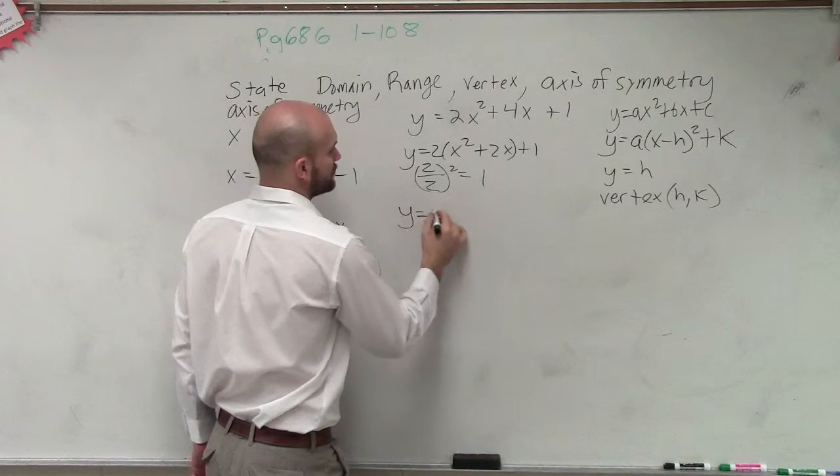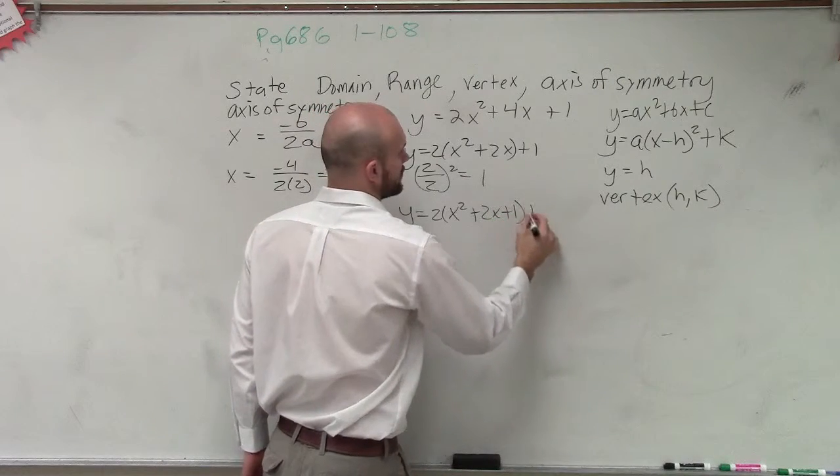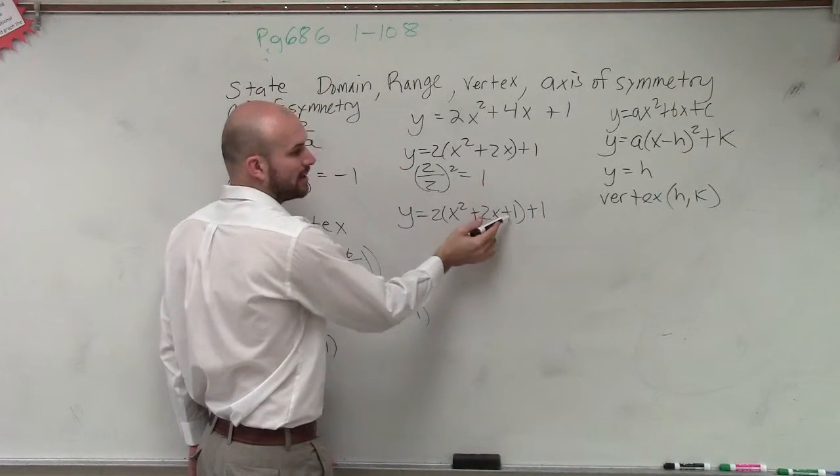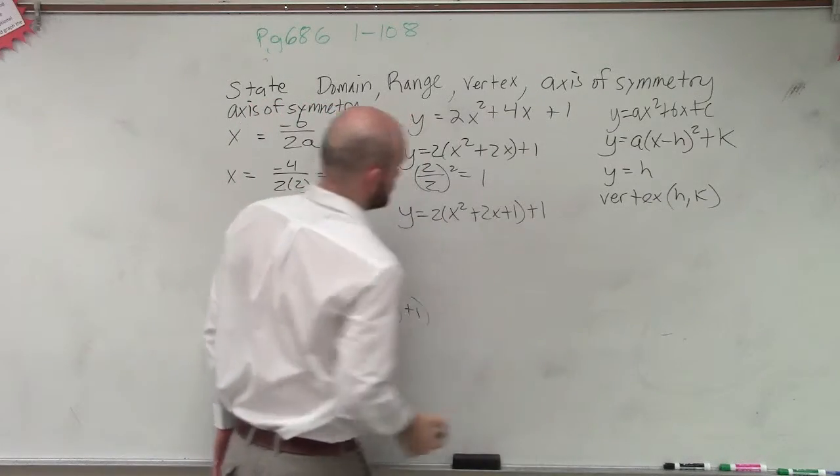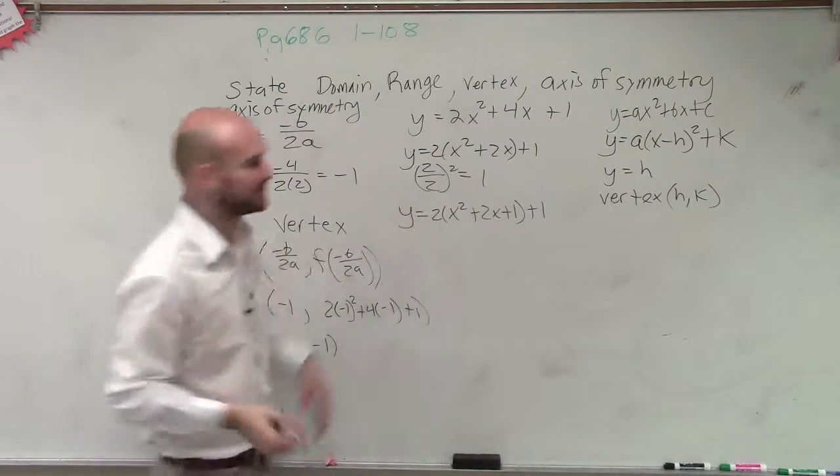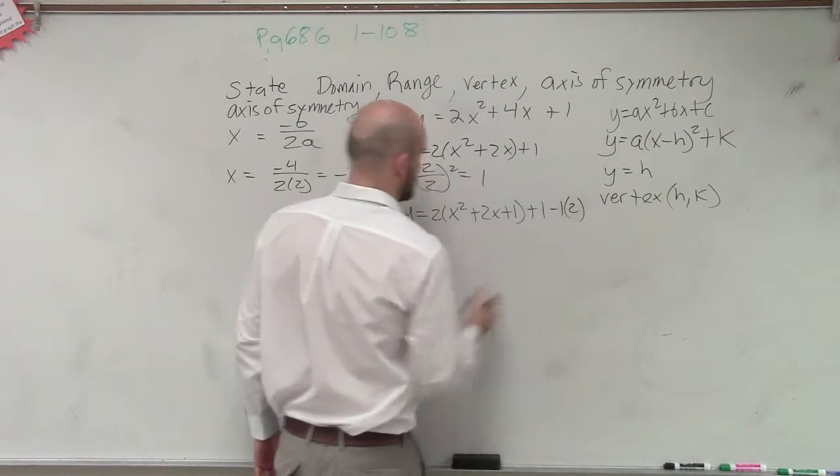So if you have y equals 2 times x squared plus 2x plus 1 plus 1, and then you've got to add the 1 again, but then the 1 is being multiplied by the 2. You've got to subtract 1. It's on the same side. Minus 1 times 2.